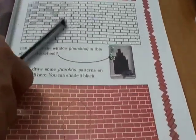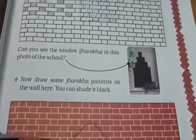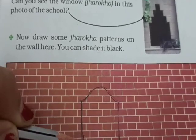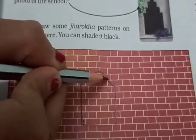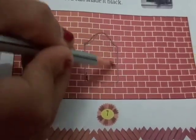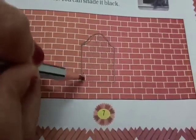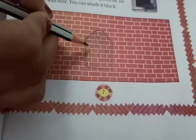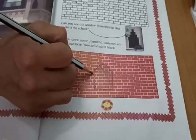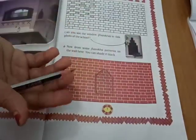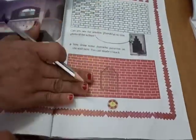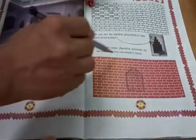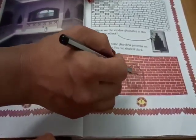Draw some Jarokha patterns on the wall here and shade them black. I have done one example for you — you can make your own Jarokha pattern on this wall. See, this is a Jarokha pattern; shade it black so you can clearly see the window part and the empty part. You can make three or four designs or one single beautiful design — make your own Jarokha patterns in the textbook.